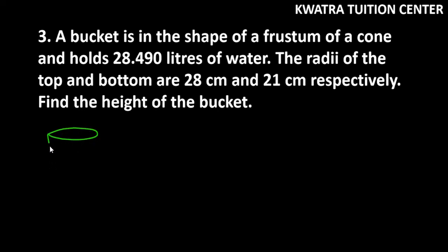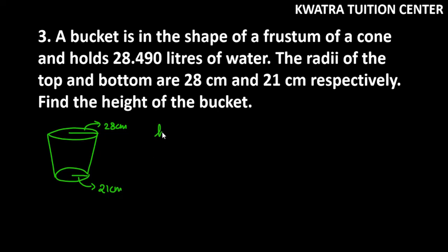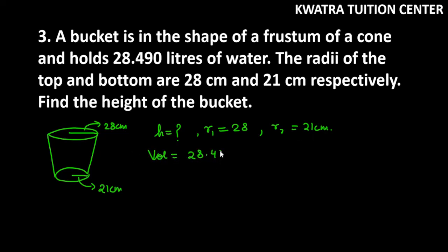We have a bucket in the shape of a frustum. The top radius R1 is 28 cm, and the bottom radius R2 is 21 cm. We have to find the height H of the bucket. The volume is also given as 28.490 litres.